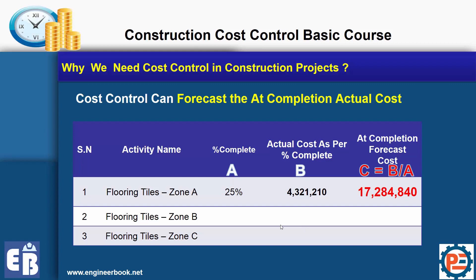Let's say you completed 25% of an activity and the actual cost for that 25% is a known number. You can easily forecast the at-completion cost using this simple formula.